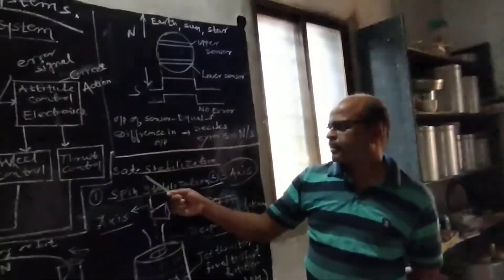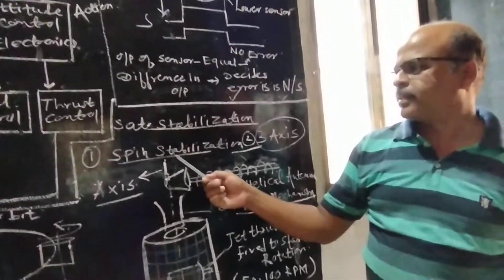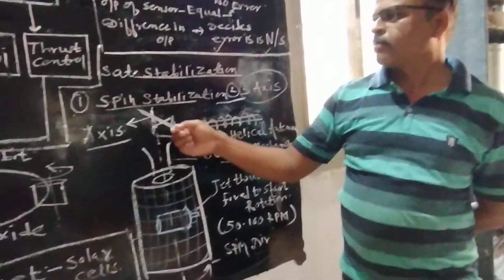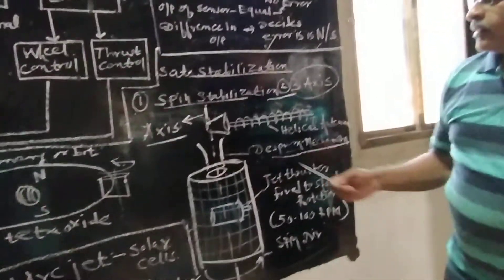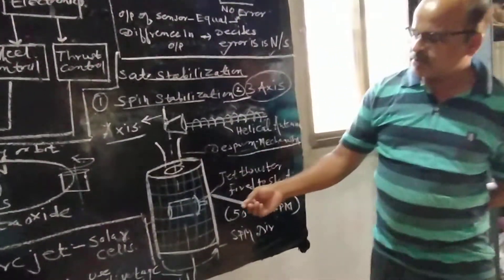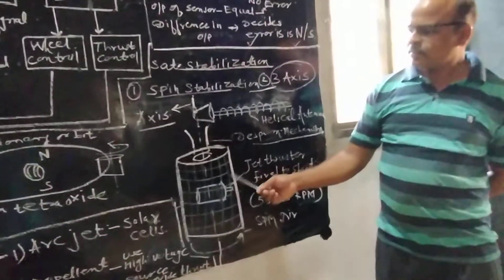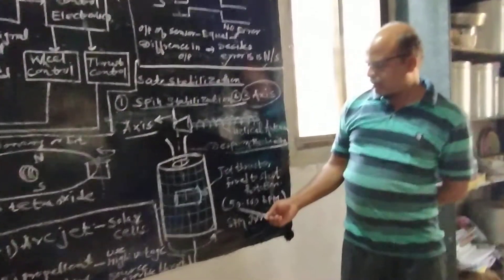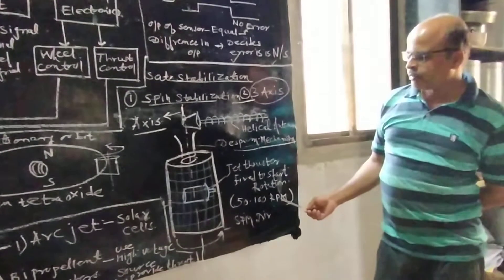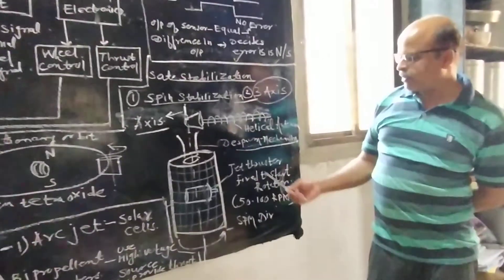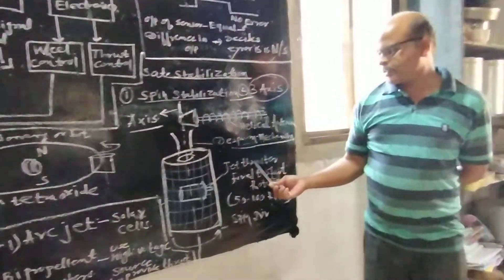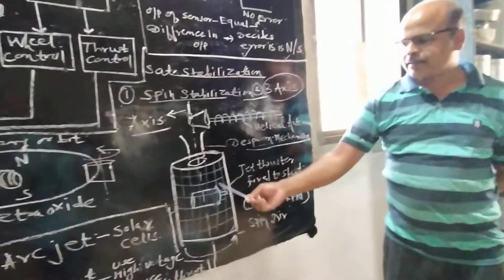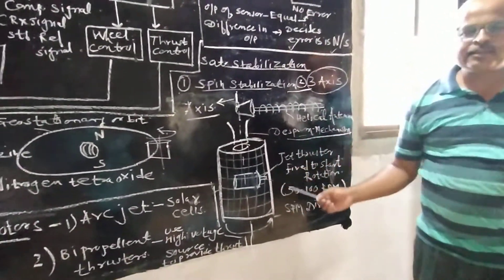Then we will study different satellite stabilization methods. In this lecture, we will first study spin stabilization, and in the next lecture we will study three-axis stabilization. In spin stabilization, this method is generally used in cylindrical shaped satellites. As shown in this figure, the satellite is rotated 50 to 100 revolutions per minute, and the satellite spinning action is provided with the help of gas jet thrusters. These gas jet thrusters are fired to start the rotation of the satellite — that is, the spinning is provided just like a top.